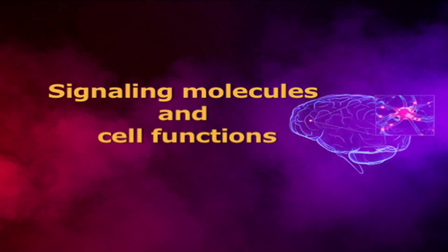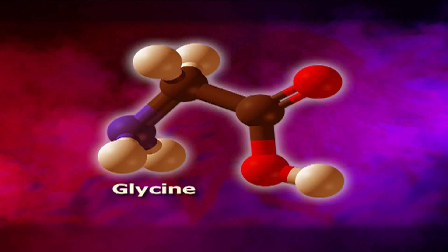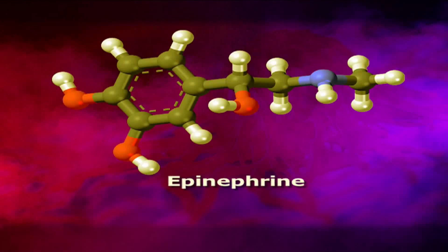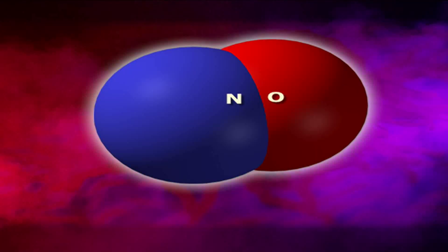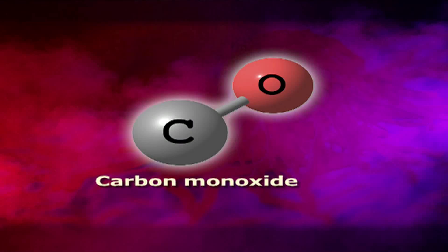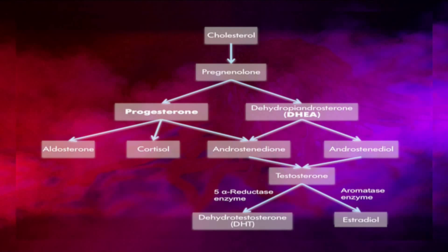Signalling molecules and their role in cell functions. Signalling molecules are amino acids and amino acid derivatives. Examples include glutamate, glycine, acetylcholine, epinephrine, dopamine, and thyroid hormones. These molecules act as neurotransmitters and hormones. Gases such as NO (nitric oxide) and CO (carbon monoxide), as well as steroids which are derived from cholesterol, also act as signalling molecules. Steroid hormones regulate sexual differentiation, pregnancy, carbohydrate metabolism, and excretion of sodium and potassium ions.